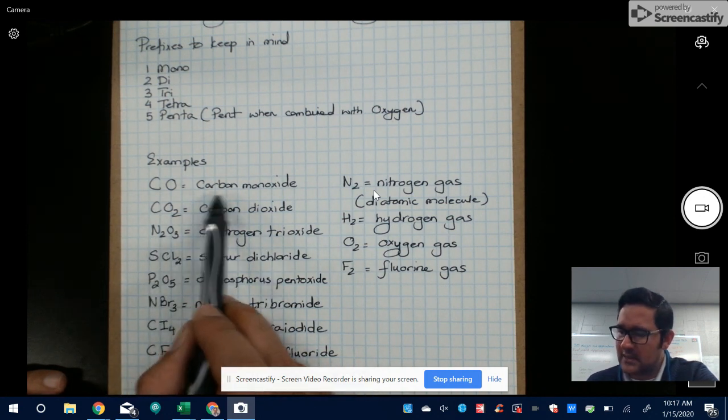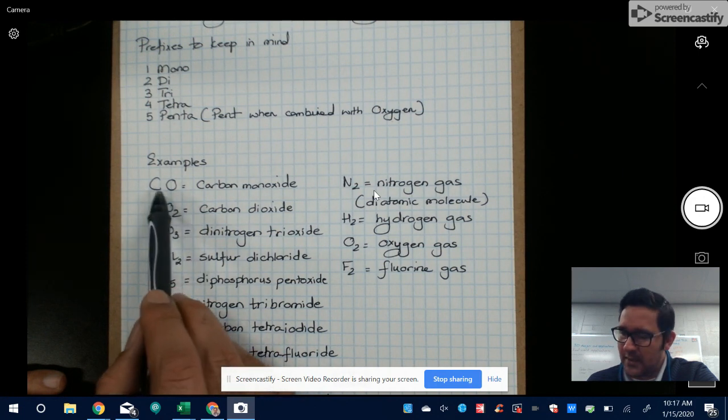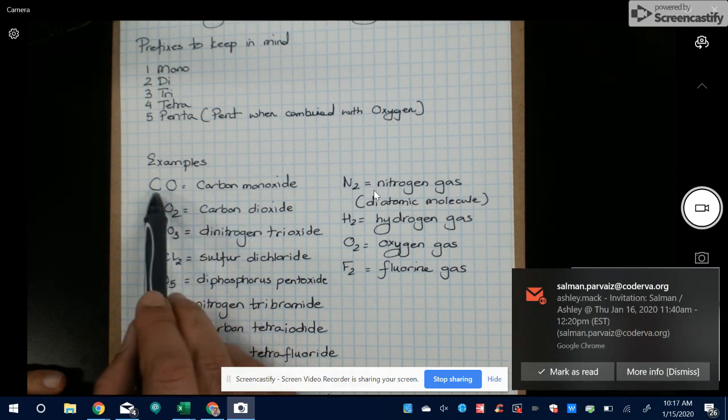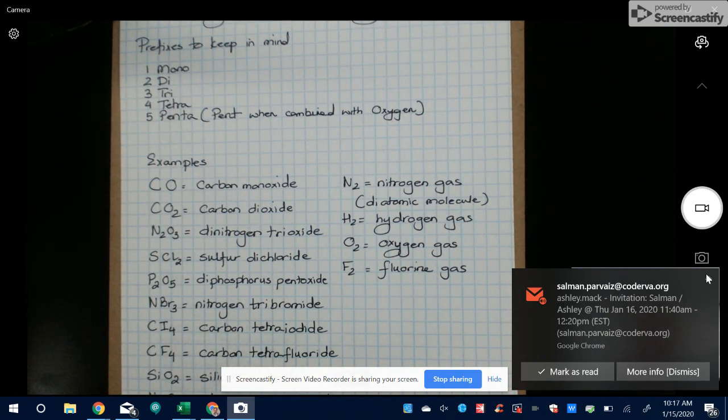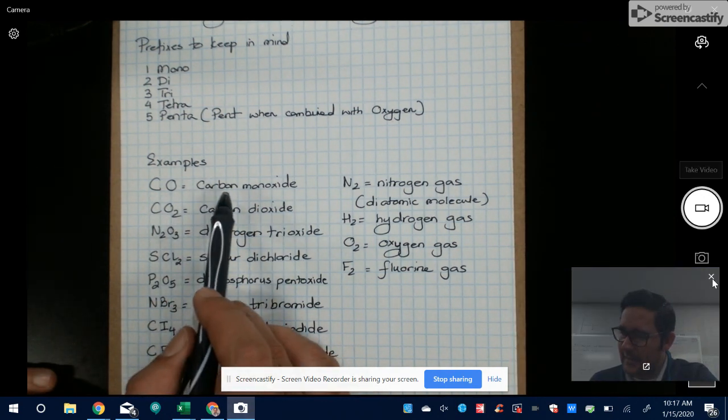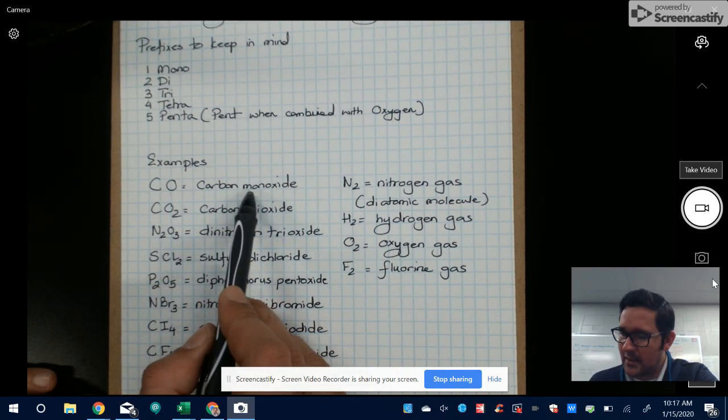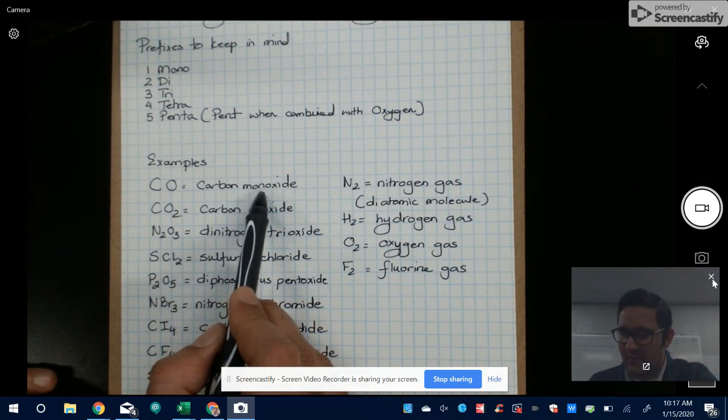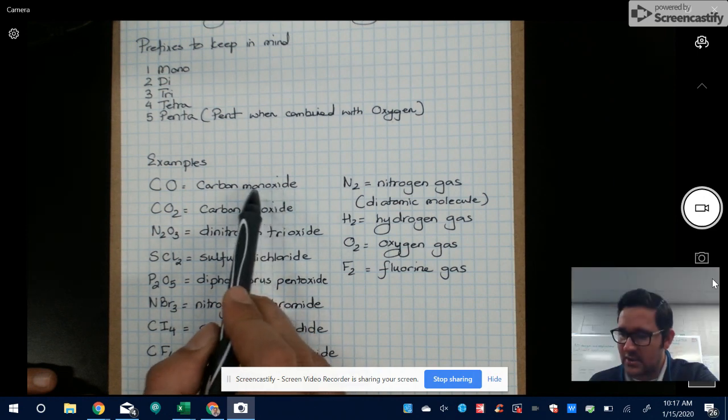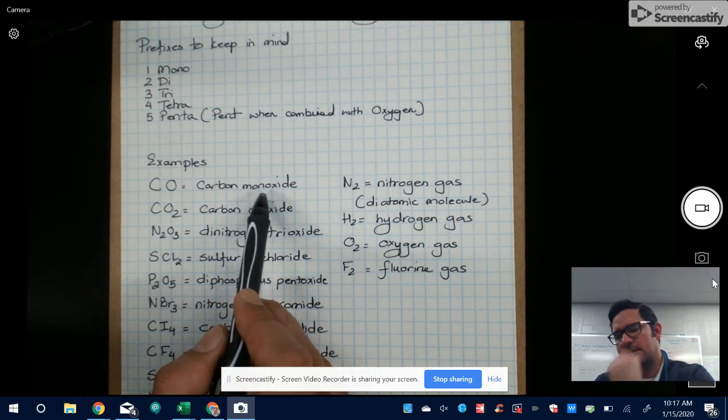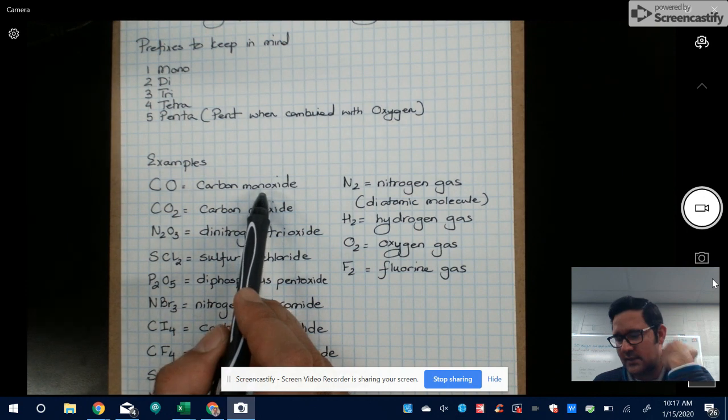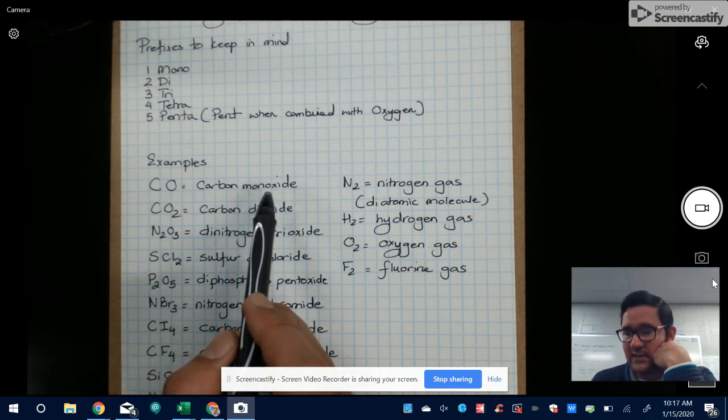So let's go through some of these for review. Carbon monoxide. One carbon, one oxygen. That's why it's carbon. And there's one carbon and there's one oxygen, so it's carbon. And then we're going to use the prefix for the oxygen monoxide. So mono is a prefix that's used for one single element. And it's usually used for the second element.